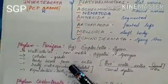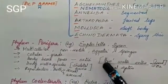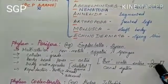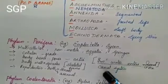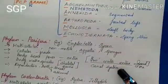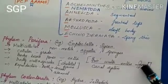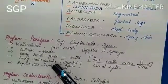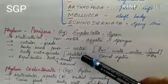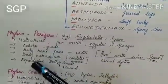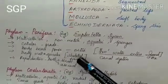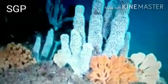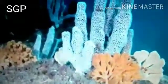The body of Porifera bears pores known as ostia. Through these pores, water enters along with food material and oxygen into the body, circulating inside through a canal system. The body wall is made up of spicules which form a skeletal frame. These organisms reproduce both by sexual and asexual methods.